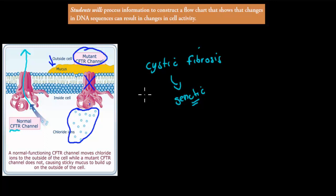I've tied all this into the actual dot point. The dot point itself says students will process information from secondary sources to construct a flowchart that shows that changes in DNA sequences can result in changes in cell activity.